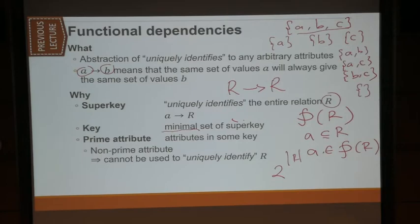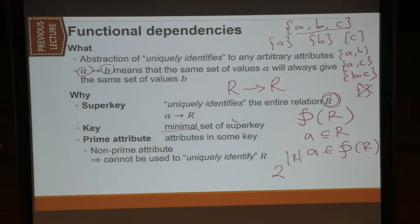Algorithm one is to find the attribute closure. If you can find all the power sets excluding the empty set, all you have to do is run algorithm one and check if the result is exactly R. If the result of algorithm one is exactly R, that means whatever left-hand side you used at the start is a superkey. If it is minimal — meaning you cannot remove any member of that set and still make it a superkey — then you arrive at the key.